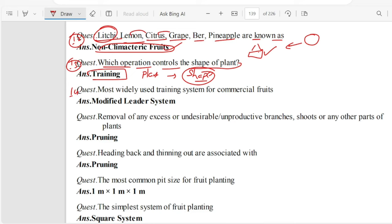Question number 14. Most widely used training system for commercial fruits is modified leader system. Modified leader system is used for commercial fruit production.